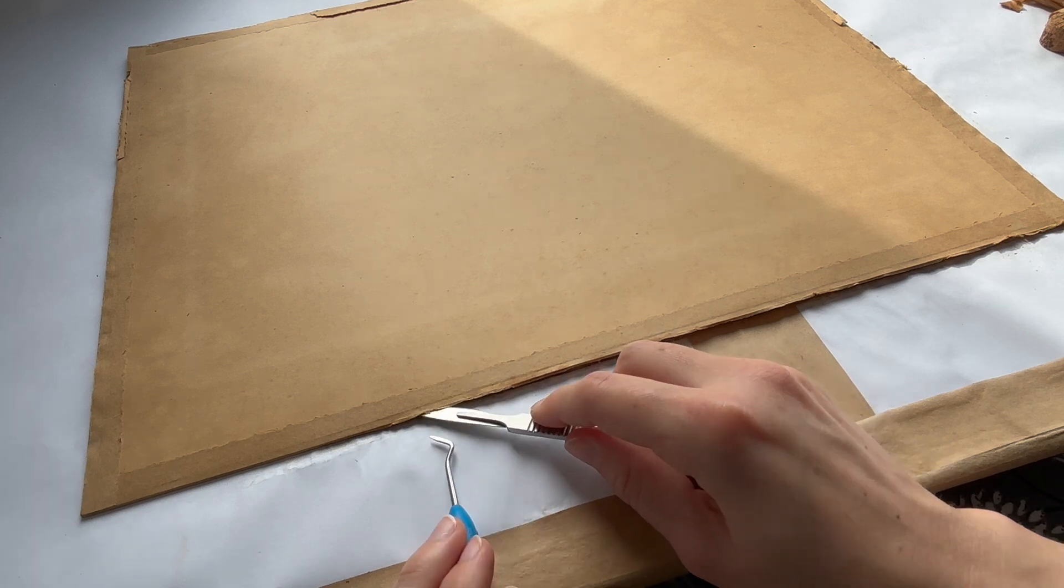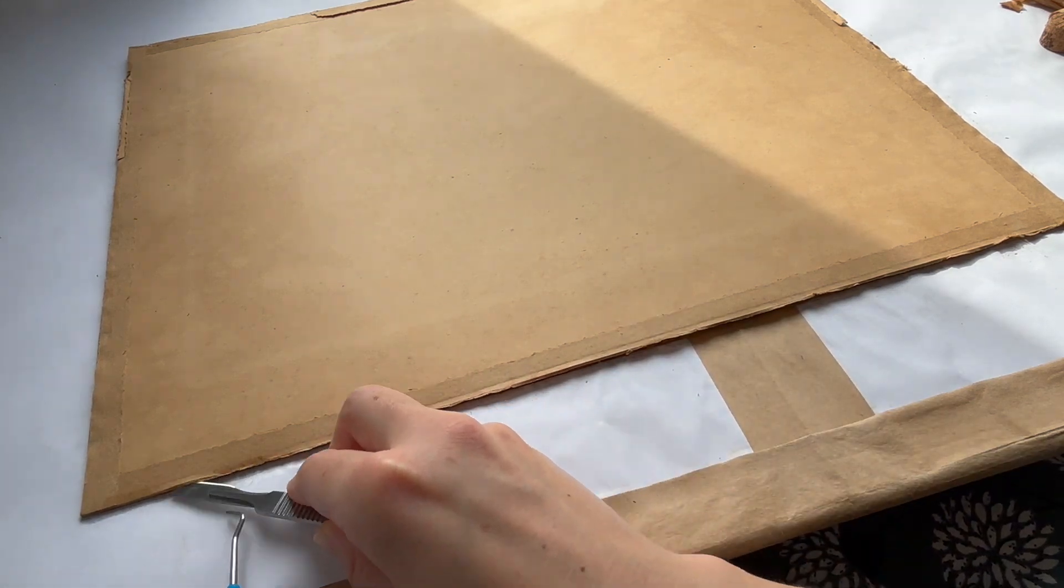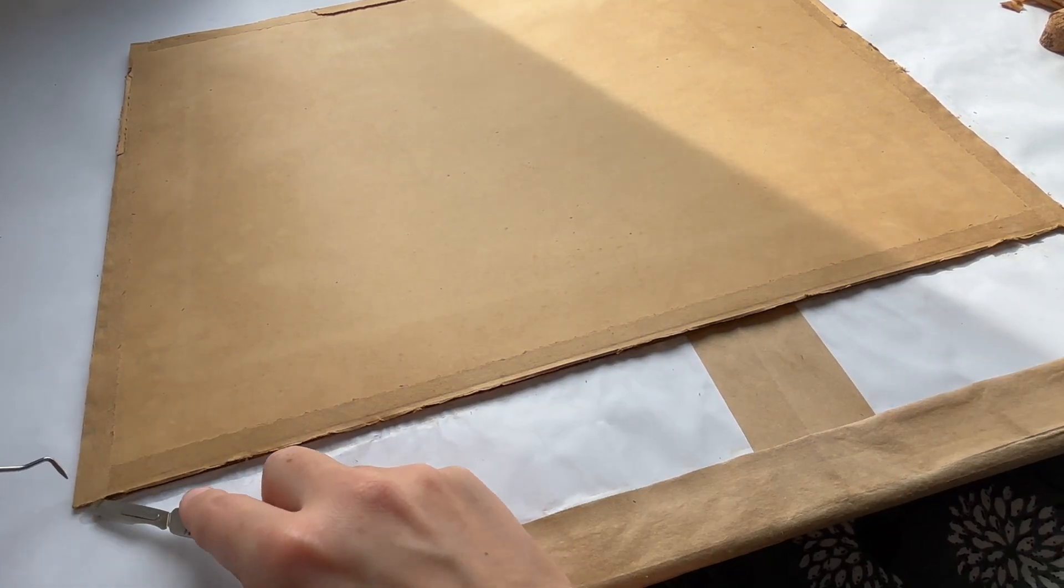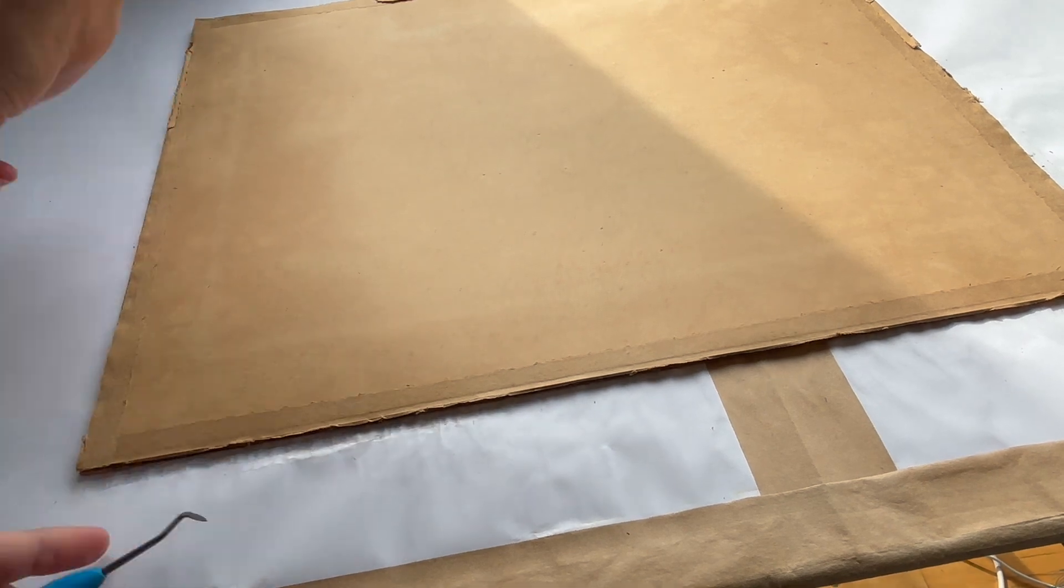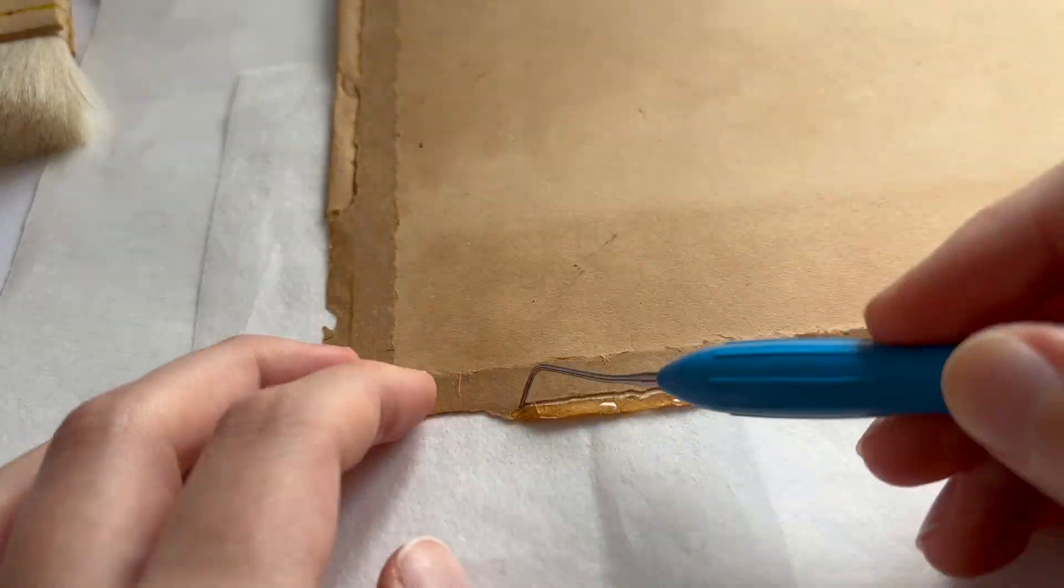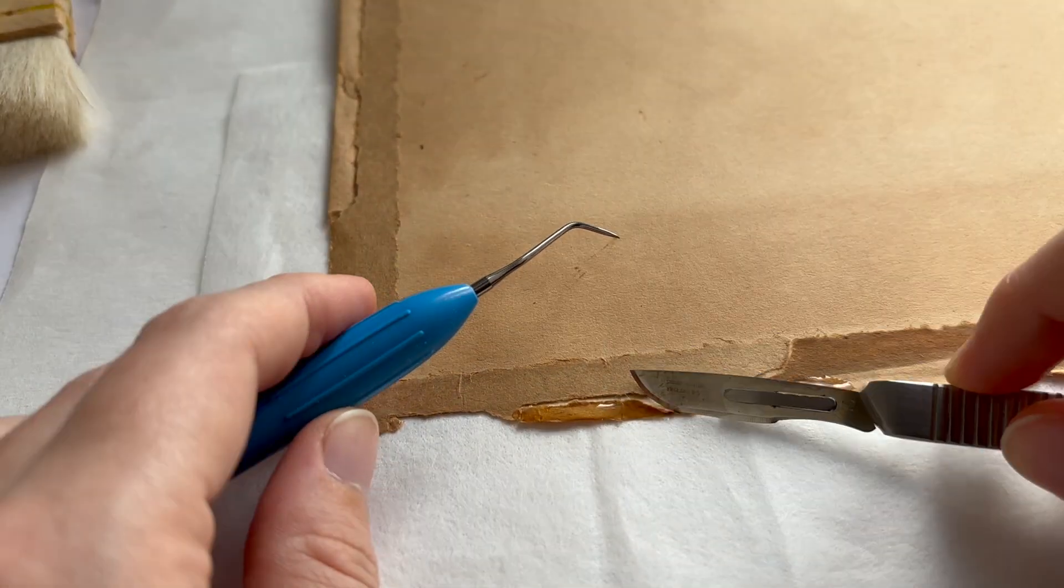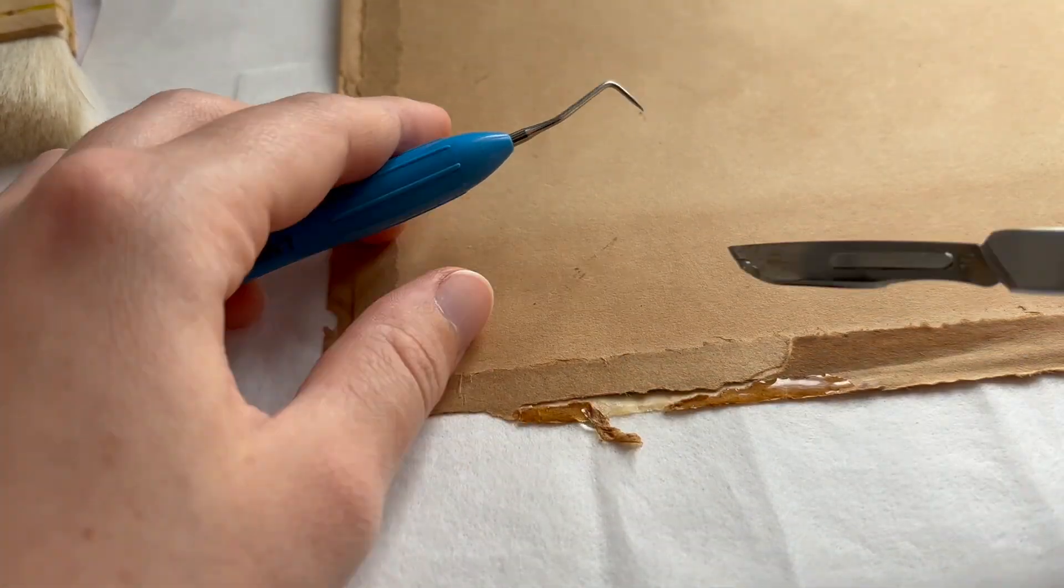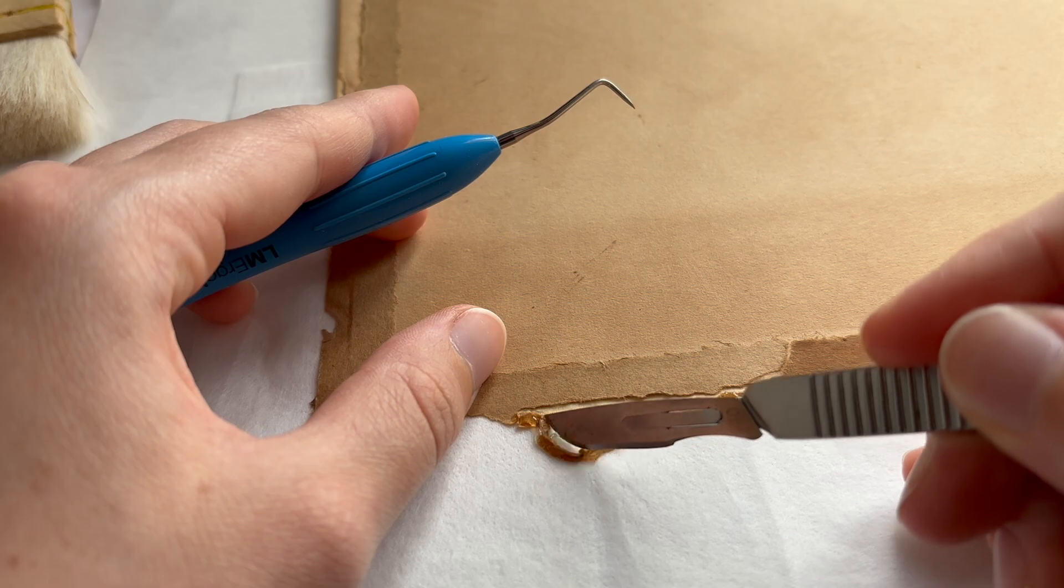To begin with, I use a scalpel to cut along the edge to remove the glass, and then I start working on the tape on the object. There's a strip of tape all around that needs to be removed. But since the object is made of very thin paper, I don't dare to scrape it off with the scalpel.